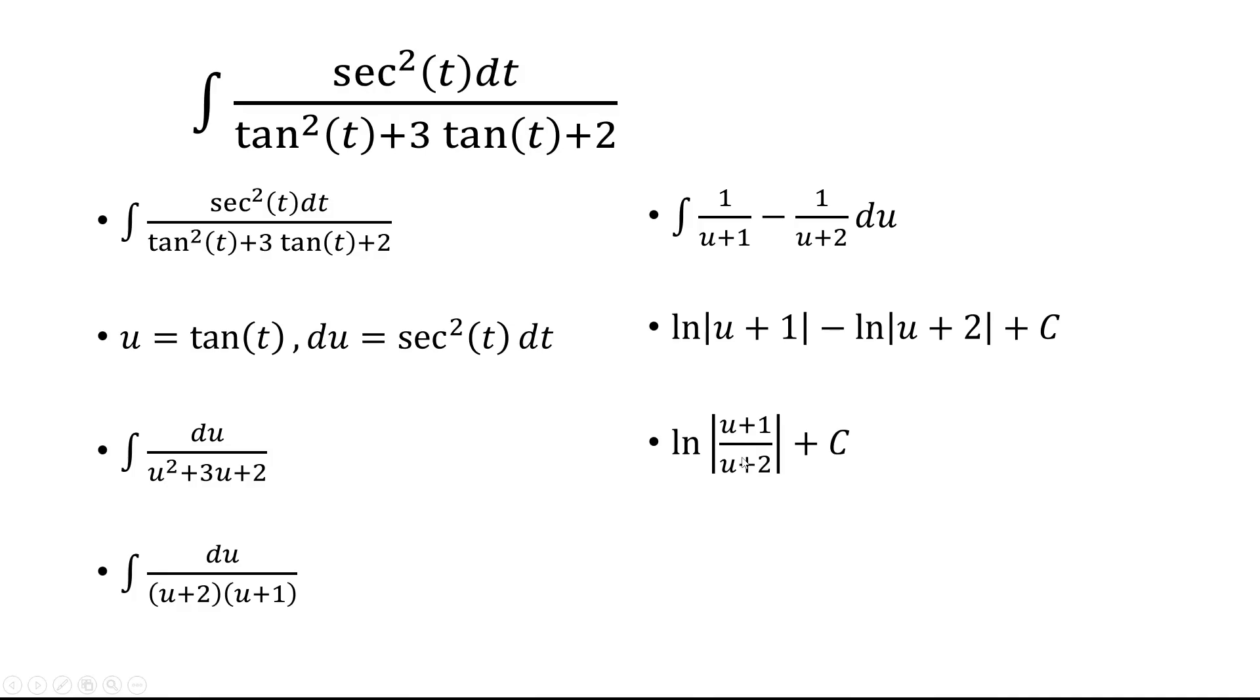And then we're going to replace u with tangent. So we have ln of tangent t plus 1 over tangent t plus 2 plus c. That's our final answer.